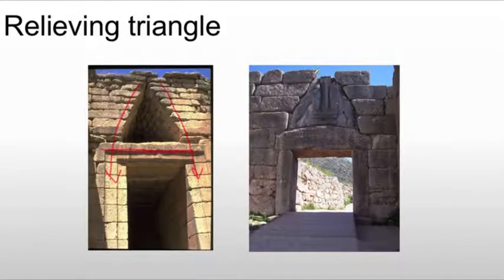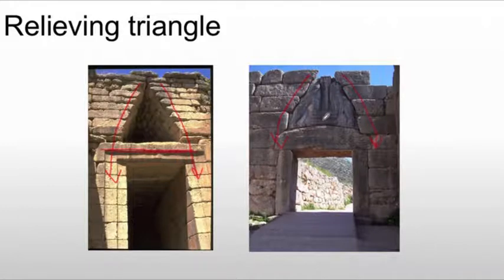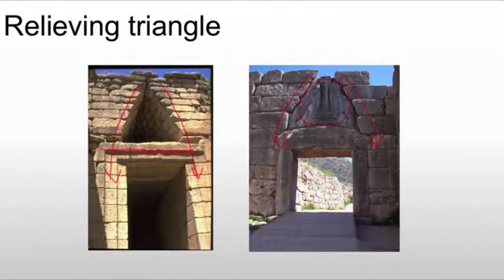Here we're doing the same thing. This wall would have been higher in ancient times, and we're pushing it all down in compression. The stone you see in the middle is much, much lighter, so it isn't putting much force on the lintel. You'll notice that it overlaps down to the posts, once again pushing that weight down through the posts and taking as much weight as possible off the lintel.